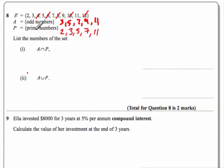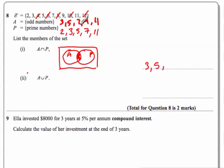And the question is, list the members of the set A intersected with P. So that's, if you've got a Venn diagram, we're talking about this bit here, aren't we? This is A, and this is P. And where do these sets intersect? Well, 3 is in both, isn't it? So 3 must be in there. 5 is in both. 7 is in both. And 11 is in both.